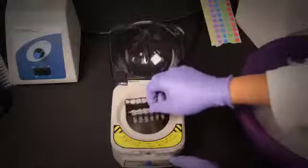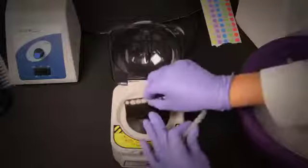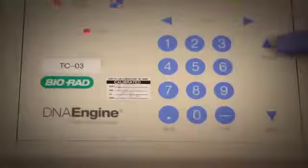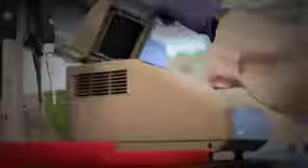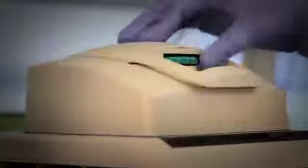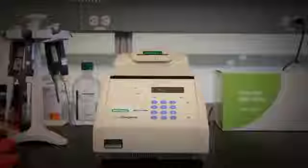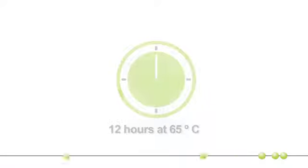Put the tubes in the PCR machine and start the incubation program if it hasn't already started. Make sure that the heated lid feature is activated and the lid is at temperature before closing it down over the tubes. The tubes will now incubate at 65 degrees for at least 12 hours and up to 36 hours.